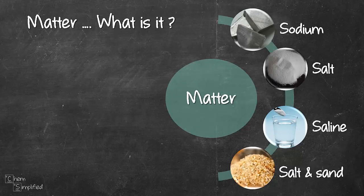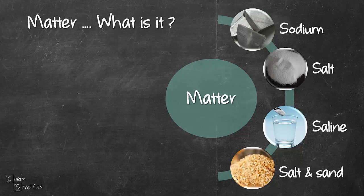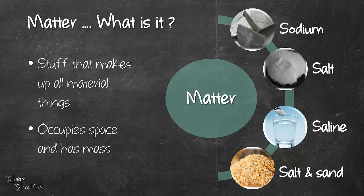First thing first, what is matter? It's the stuff that makes up all material things and it takes out space and has mass. Now that we know what matter is, let's move on to see how it is classified.